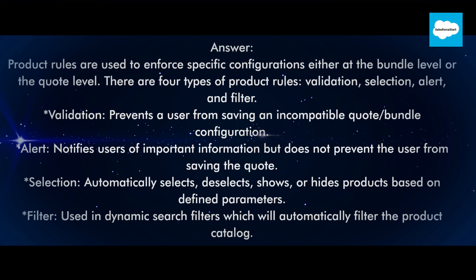Validation: prevents a user from saving an incompatible quote or bundle configuration. Alert: notifies users of important information but does not prevent the user from saving the quote. Selection: automatically selects, deselects, shows, or hides products based on defined parameters. Filter: used in dynamic search filters which will automatically filter the product catalog.